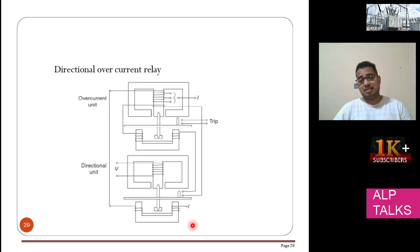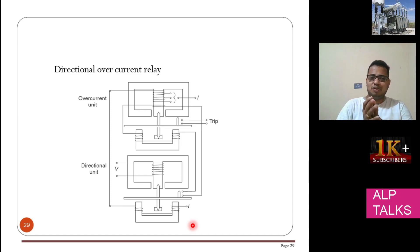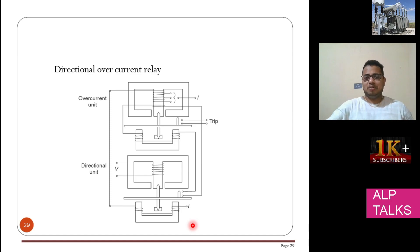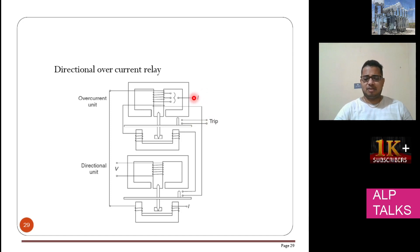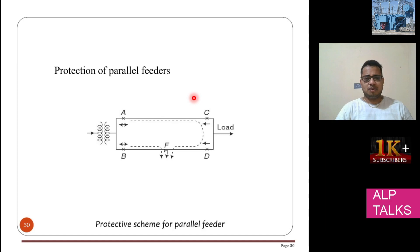This is one type of directional overcurrent relay — a combination of an overcurrent unit and a directional unit. For the directional unit, V and I are required. For the overcurrent unit, only I is required. The same current flows in both circuits.